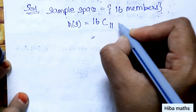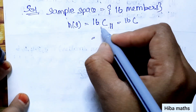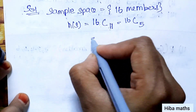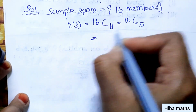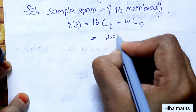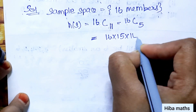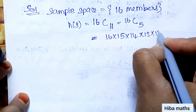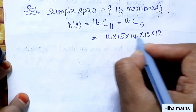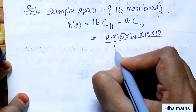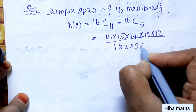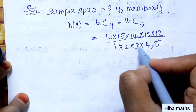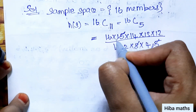Now, what do we need to do? 16 minus 11 is 5. So 16C11 equals 16 into 15 into 14 into 13 into 12, divided by 1 into 2 into 3 into 4 into 5. Then 5 threes are 15, and 2 sevens are 14.